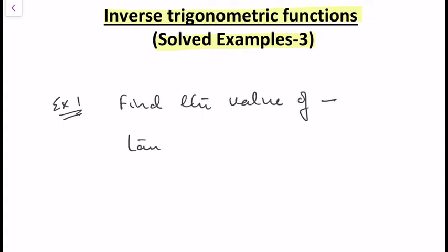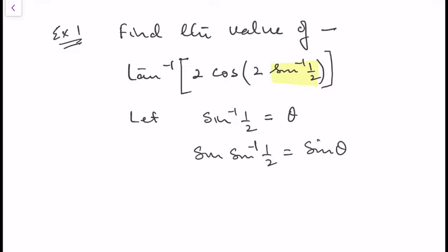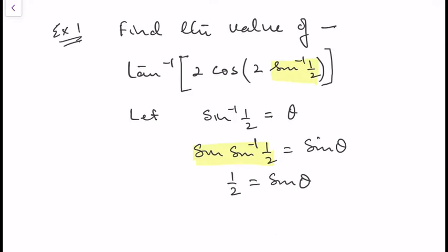In our first example, let's find the value of tan⁻¹(2cos(2sin⁻¹(1/2))). For that, let sin⁻¹(1/2) = θ. Taking sine of both sides, sin(sin⁻¹(1/2)) = sinθ, which gives 1/2 = sinθ, because sin(sin⁻¹θ) = θ. Now, sinθ = 1/2 when θ = π/6, so sin⁻¹(1/2) = π/6.